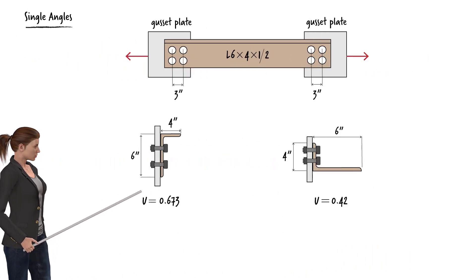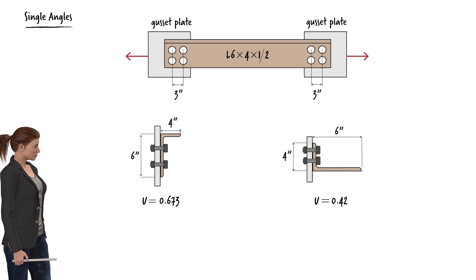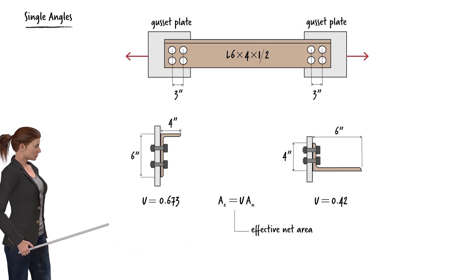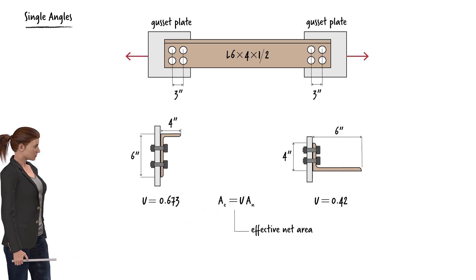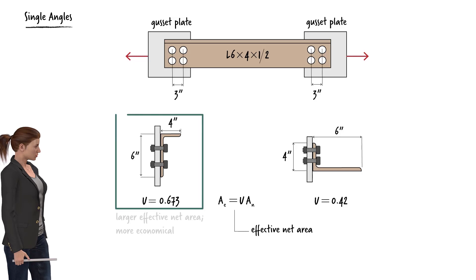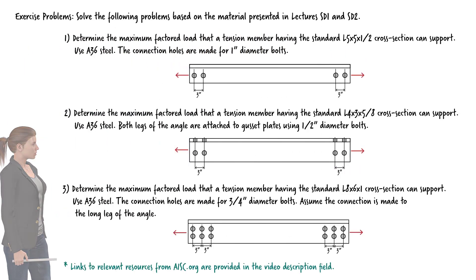In summary, if the long leg of the angle is attached to the gusset plate, the shear lag factor equals 0.673. If the short leg is attached, U equals 0.42. Assuming both designs use the same hole size, the effective net area is larger when the long leg is connected. Therefore, given an angle with unequal legs, connecting the long leg to the gusset plate is the better option — it results in a stronger tension member. We will continue this discussion in the next lecture. See if you can solve the following exercise problems.